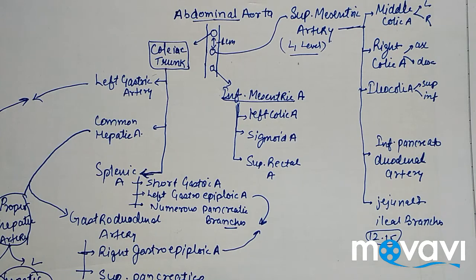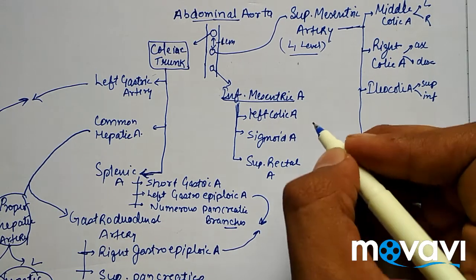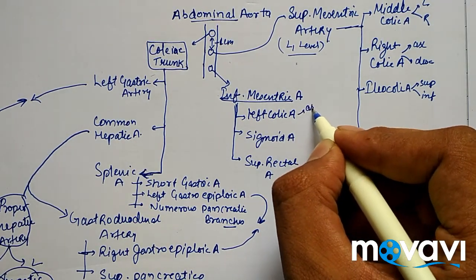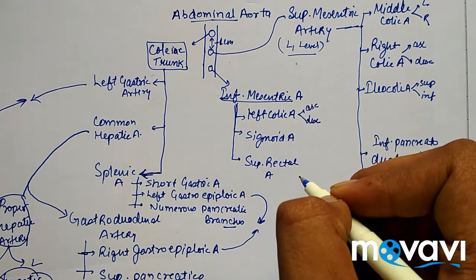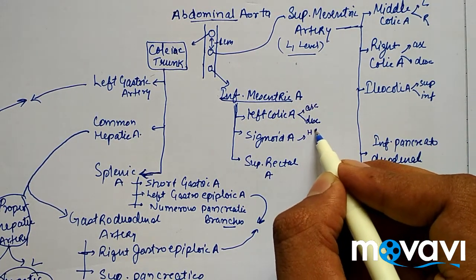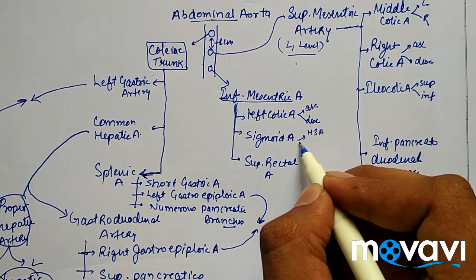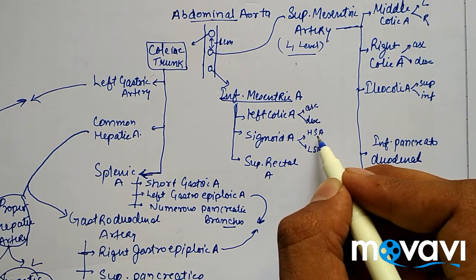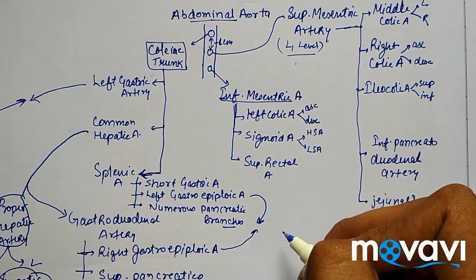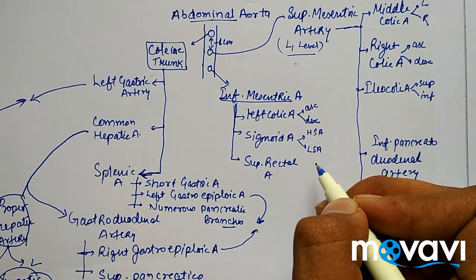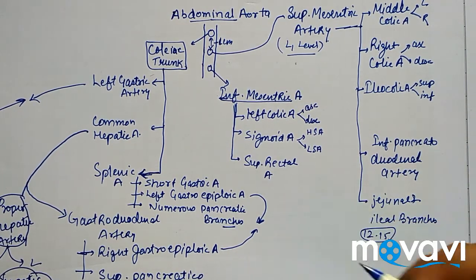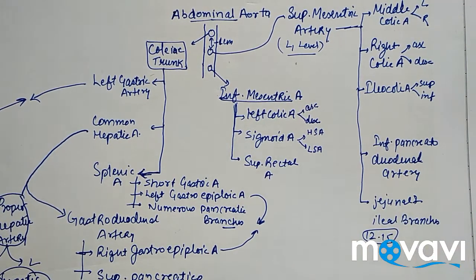The left colic artery divides into ascending and descending branches. The sigmoid artery divides into the highest sigmoid artery and the lowest sigmoid artery — remember this distinction. The superior rectal artery has no further branching.